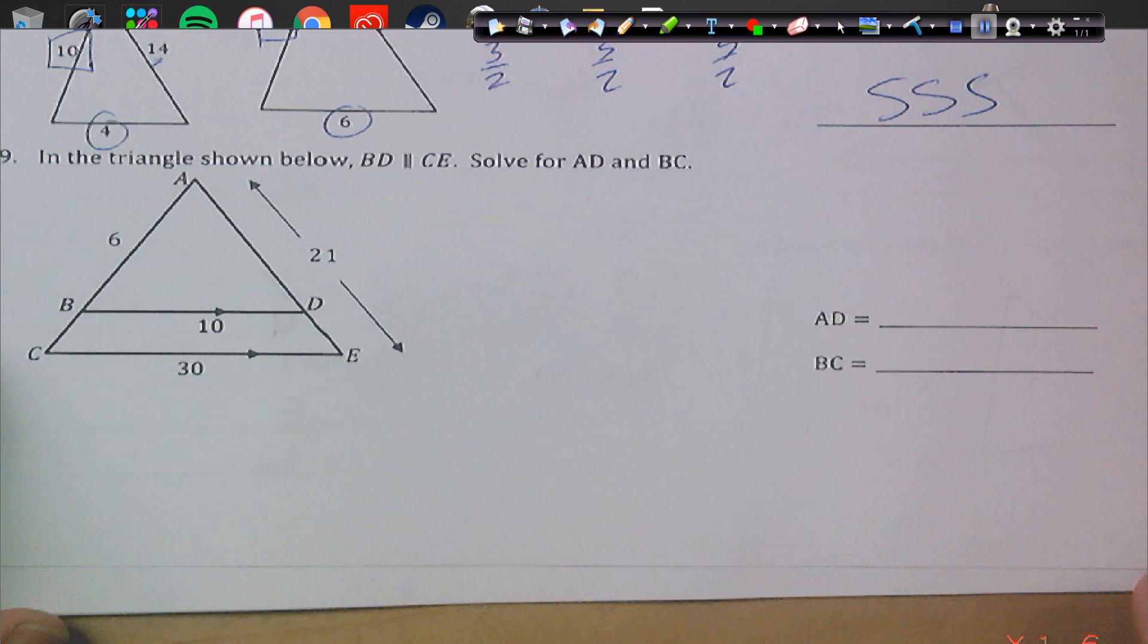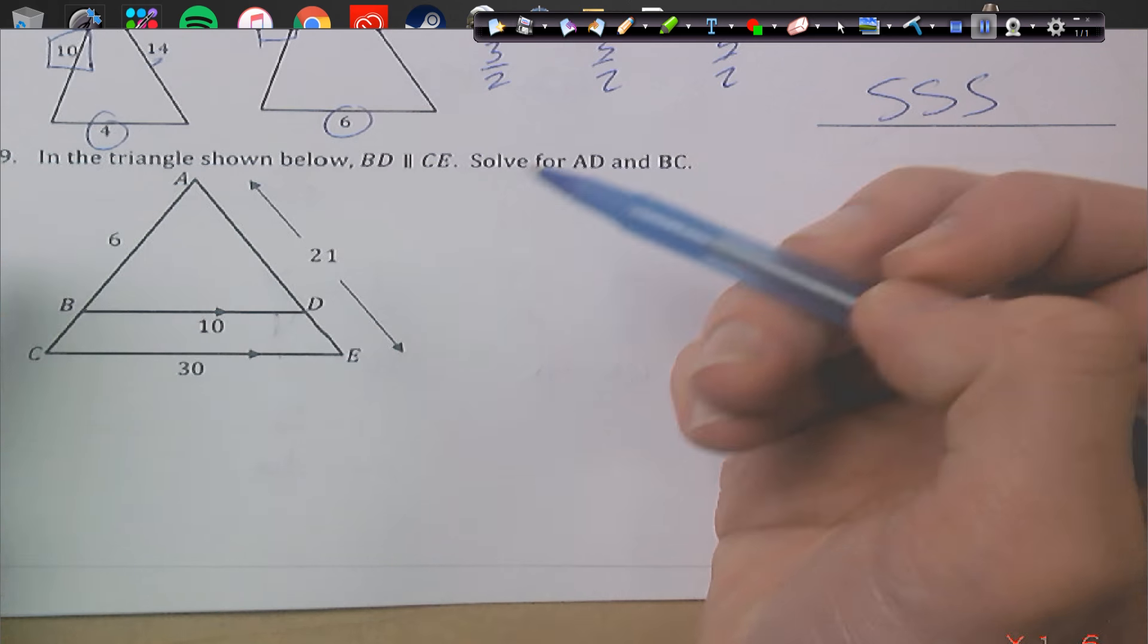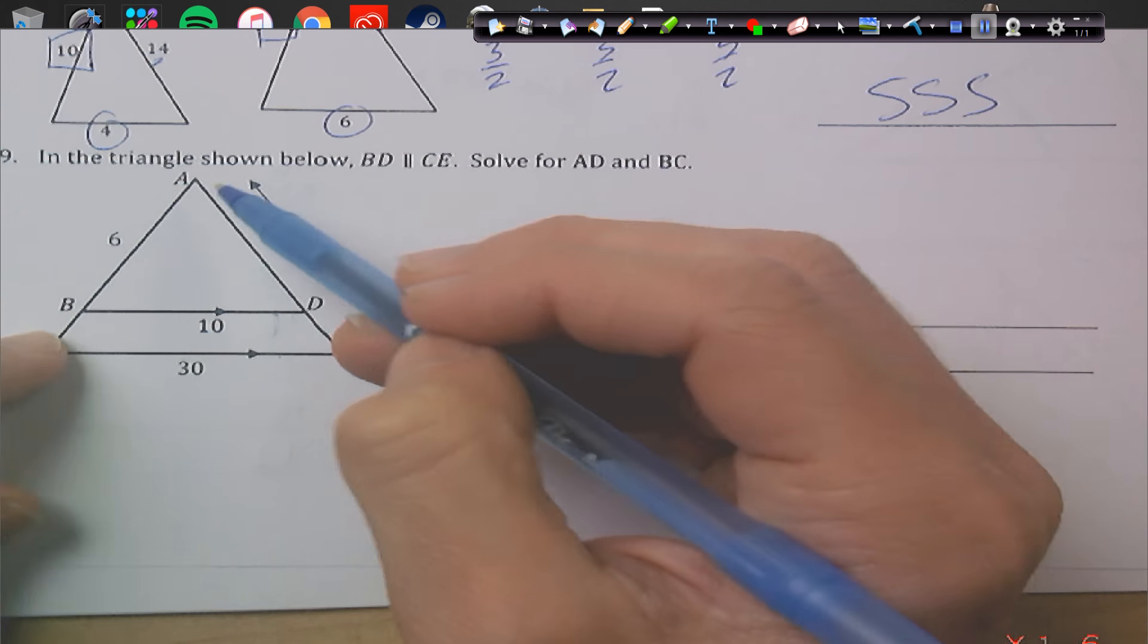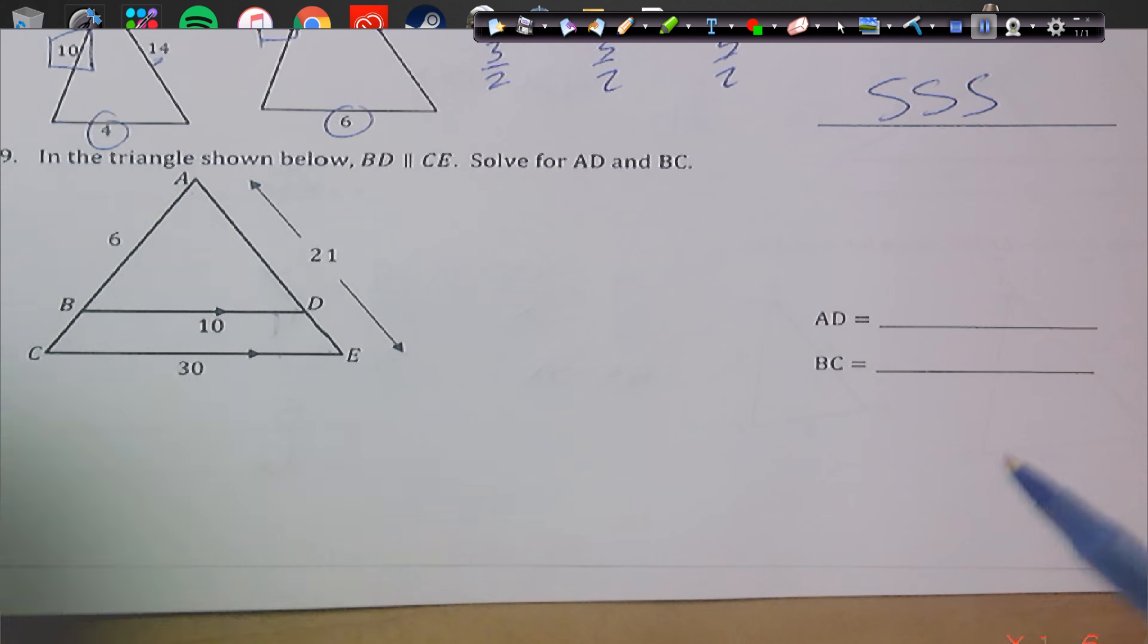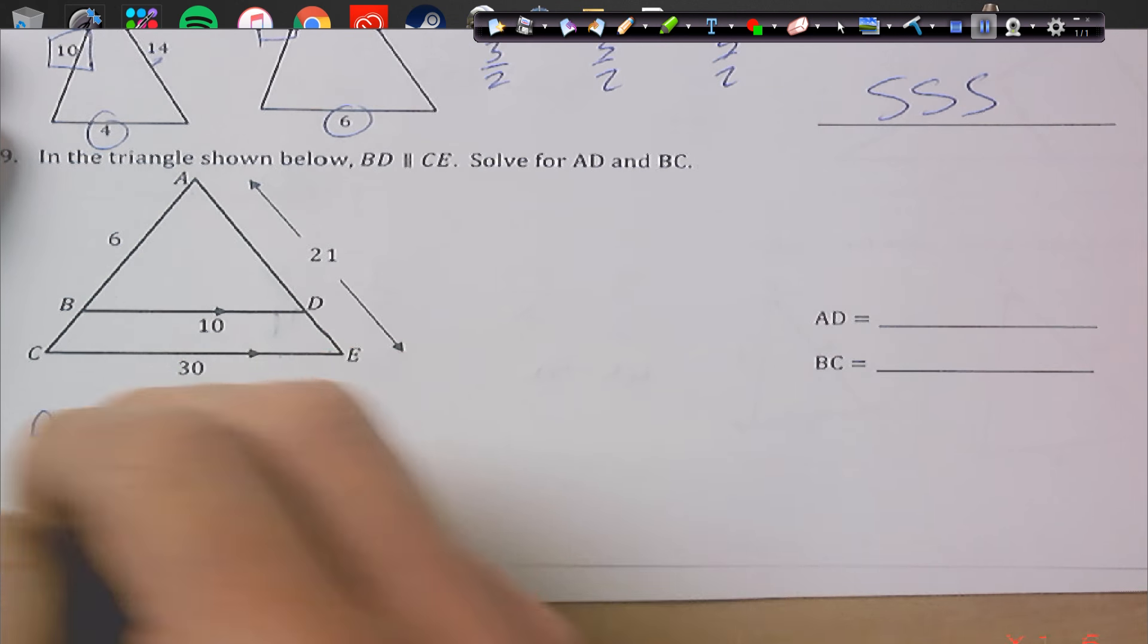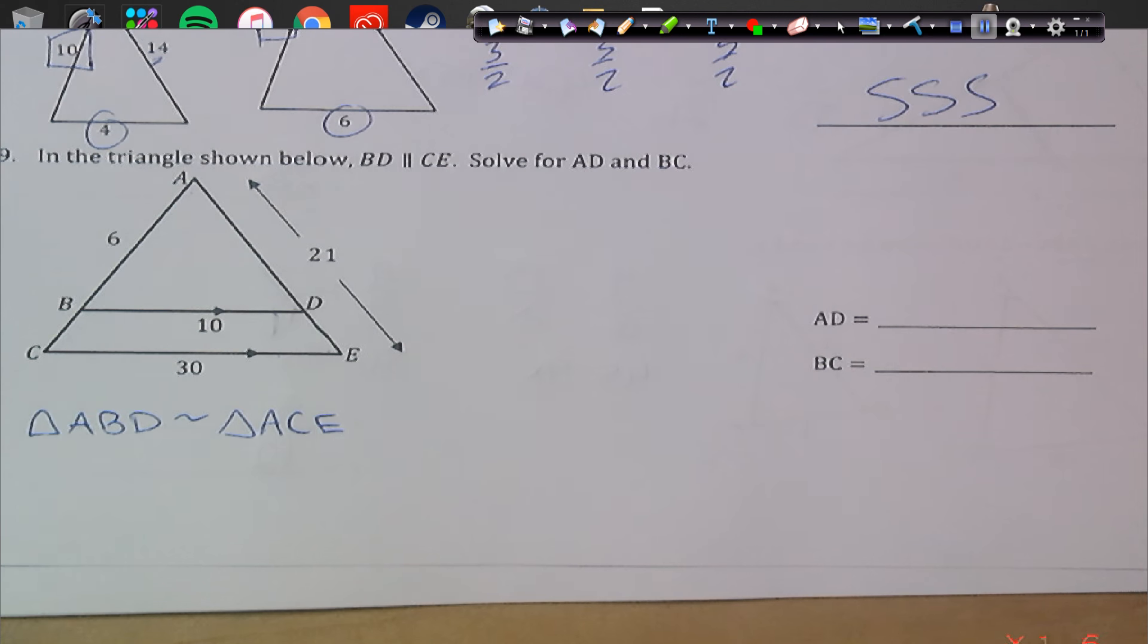Down here, the triangle below, BD is parallel to CE. Solve for AD and BC. Okay. So first of all, we already have a piece that we know is in common. This 10 and the 30. Basically, what we know is we have a big triangle and a little triangle. And they're similar because they share angles. And these angles are congruent. These angles are congruent. So it's angle, angle that these two triangles are congruent. So we know that triangle ABD is similar to triangle ACE. That's why we are able to use proportions.